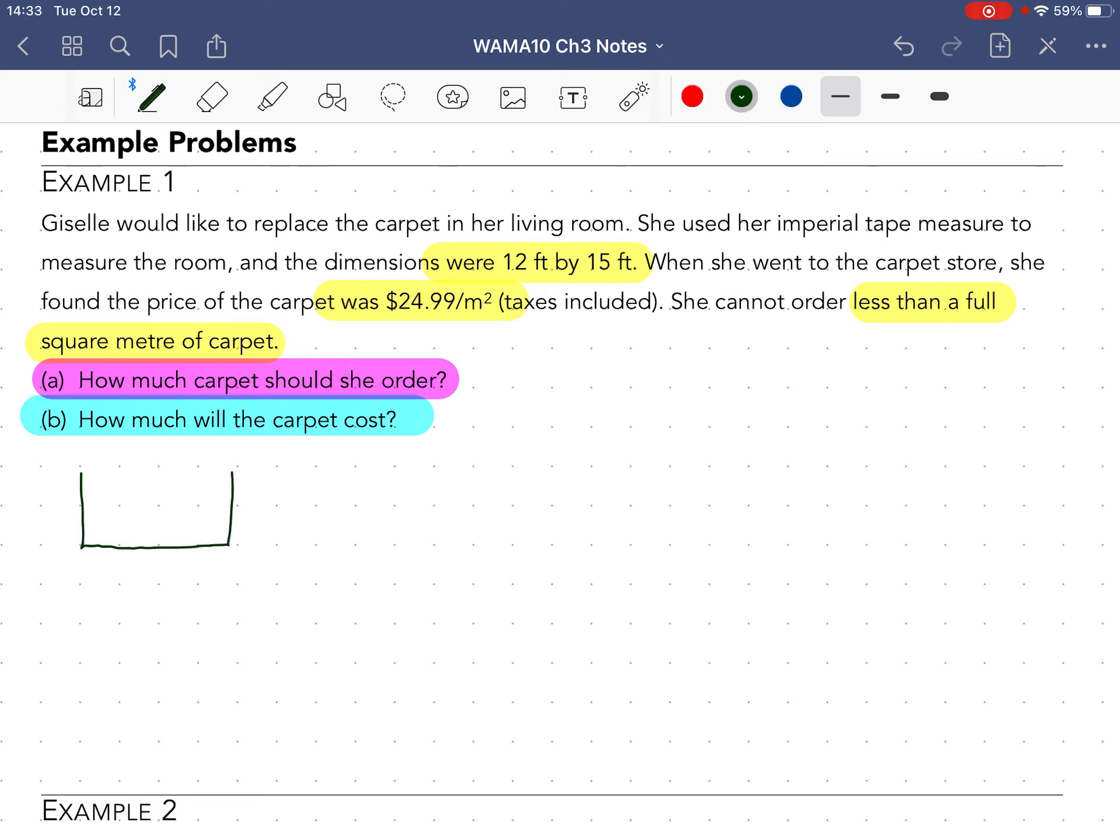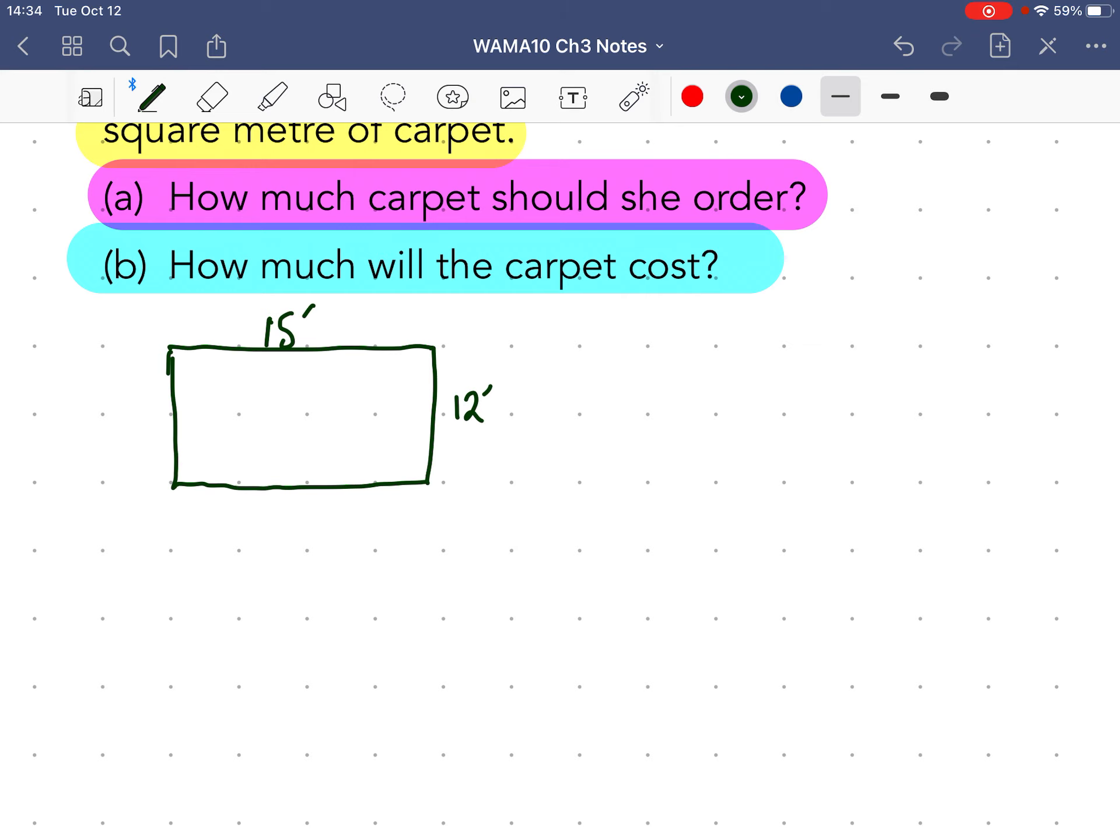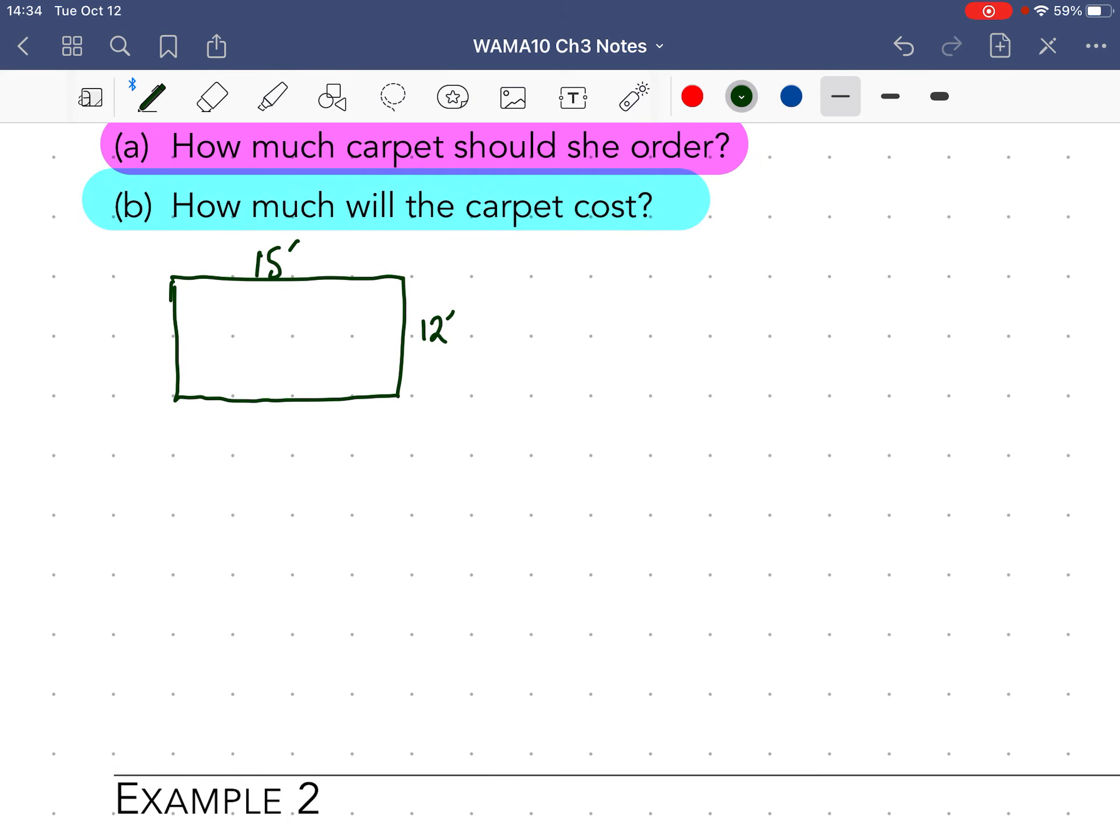So she's got a room, it is 12 feet by 15 feet. Now we need everything to be in square meters, but this is in feet. We need to convert first. We have linear measurement conversion, so we're going to convert from feet into meters.